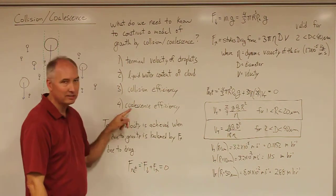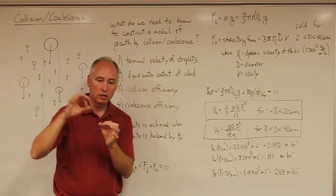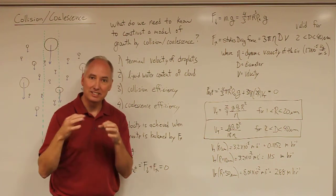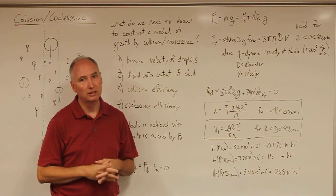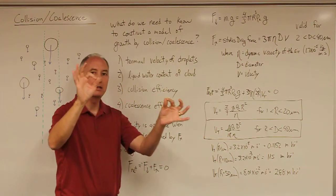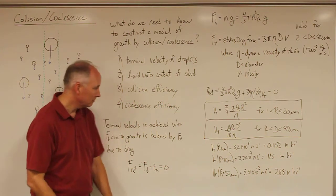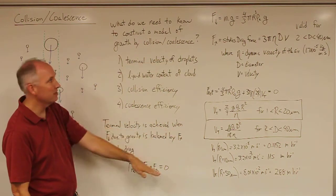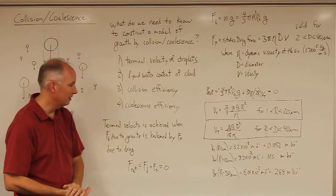Then we need another coalescence efficiency. Are there circumstances when you have two droplets that actually collide and bounce off instead of coalescing? You might have seen this effect with soap bubbles. You can blow soap bubbles and if you hit them at the right angle they'll just bounce off of one another without actually coalescing. So the first step in this process is actually to determine the terminal velocity of droplets.